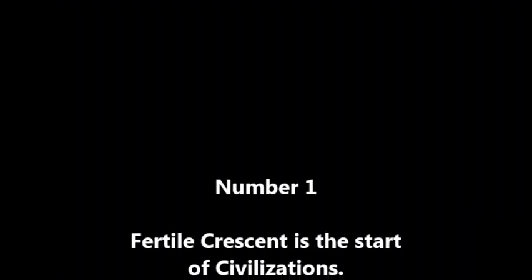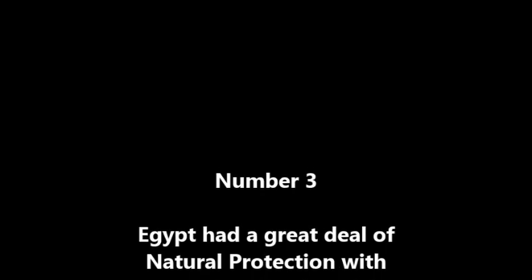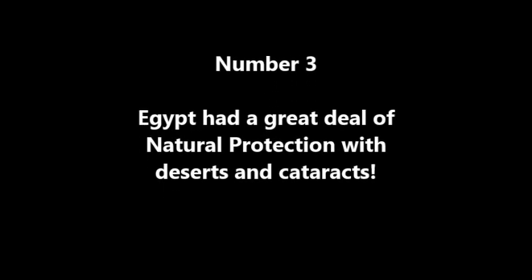In this little chart on your notes, answer the question about what are the advantages and disadvantages of the geography of both Mesopotamia and Egypt. So what were the big ideas of this video? Number one, remember that the Fertile Crescent is where civilizations start. The second big idea is that Mesopotamia was open to invasion because it had almost no natural protection. The third idea is that Egypt had a great deal of natural protection with its deserts and cataracts. Hope you enjoyed the video — keep watching, keep up with your notes, and see you at the next one.